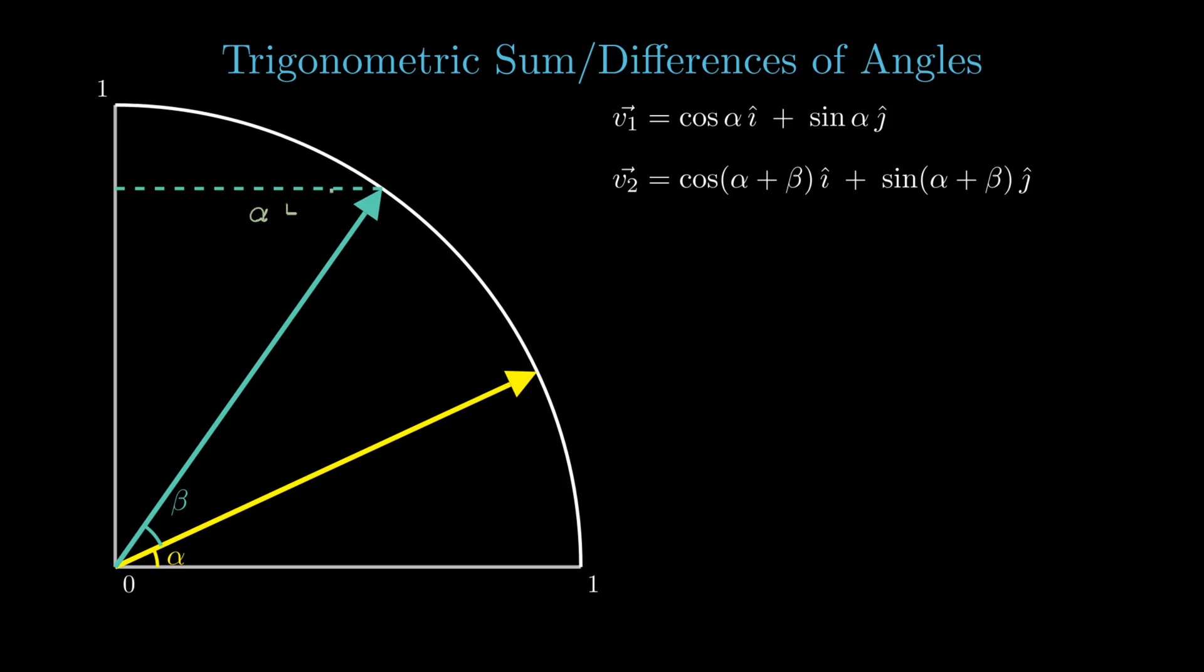First, let's drop this perpendicular from v2's head to the y-axis, forming a right-angle triangle, with the hypotenuse being the radius of the circle, which is 1. Now, the vertical piece is sin(α+β), while the horizontal one is cos(α+β). So, in a sense, these are the two trigonometric sums we wish to find the expressions for. Let's see if these can be related to any other lengths.